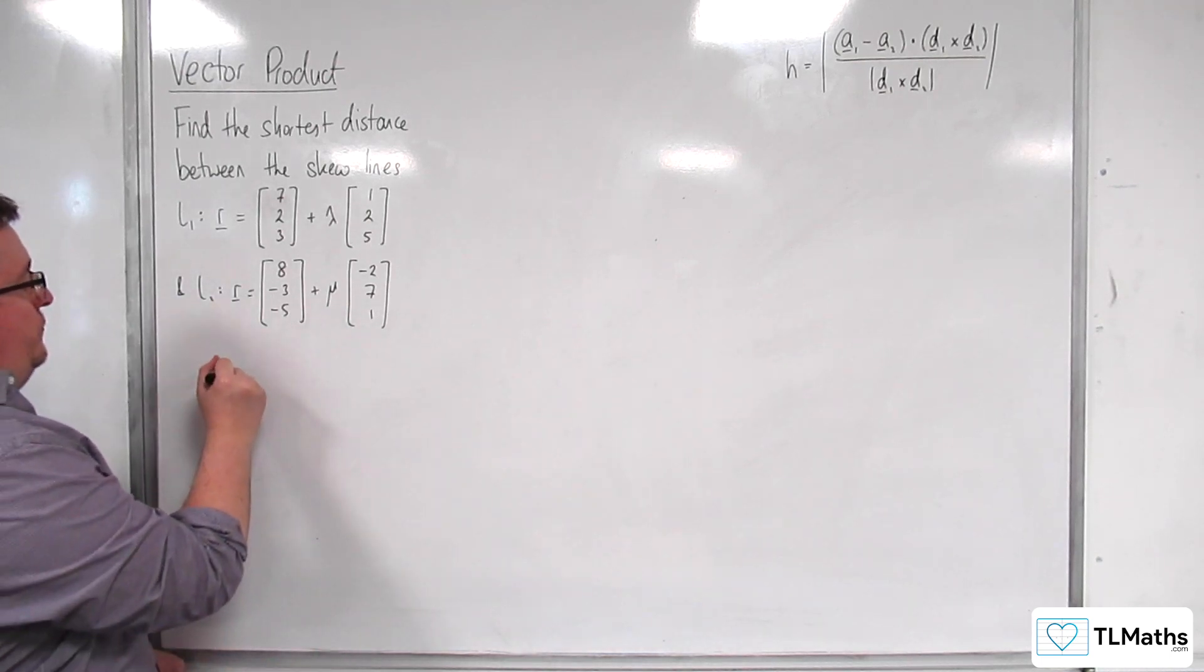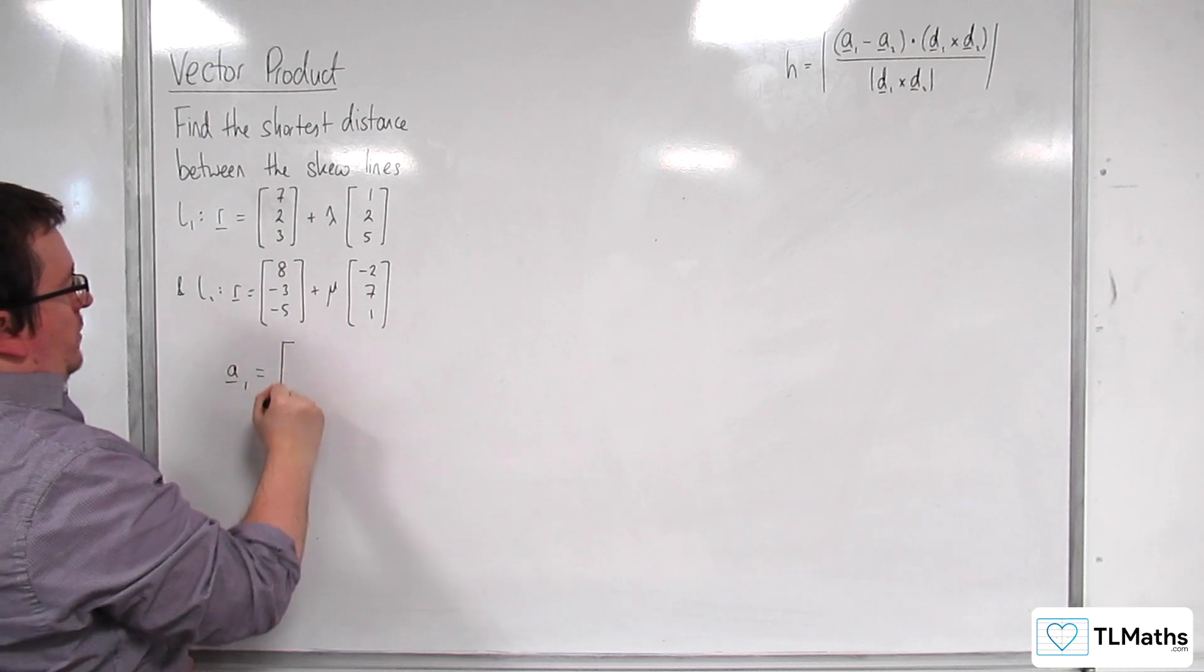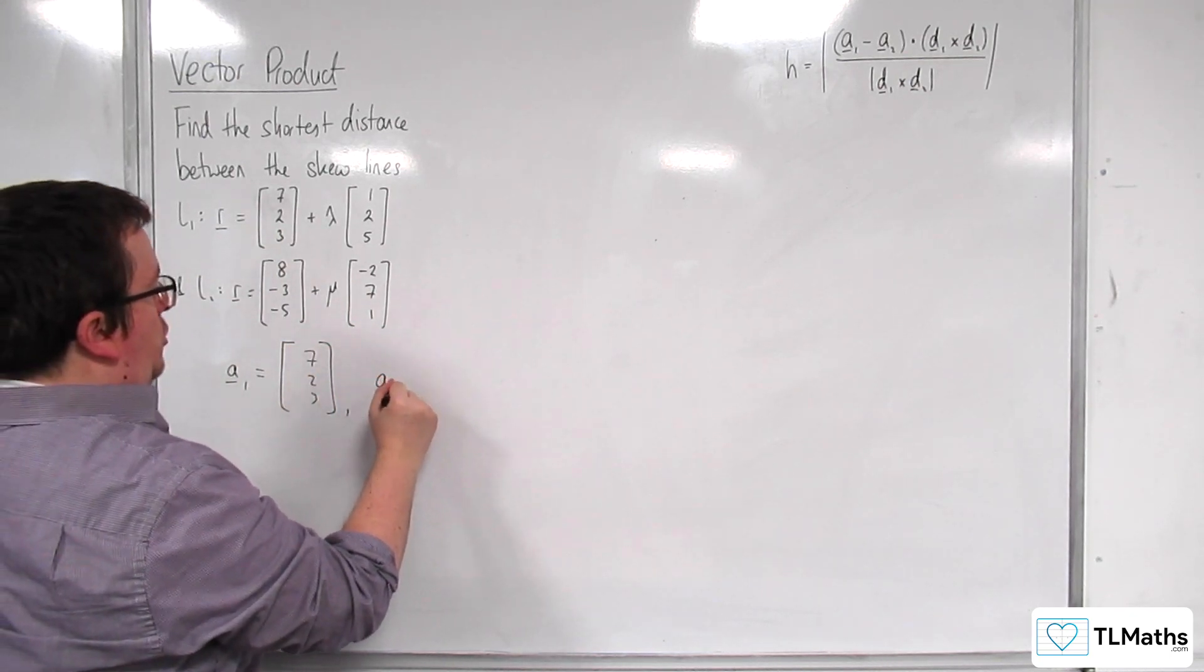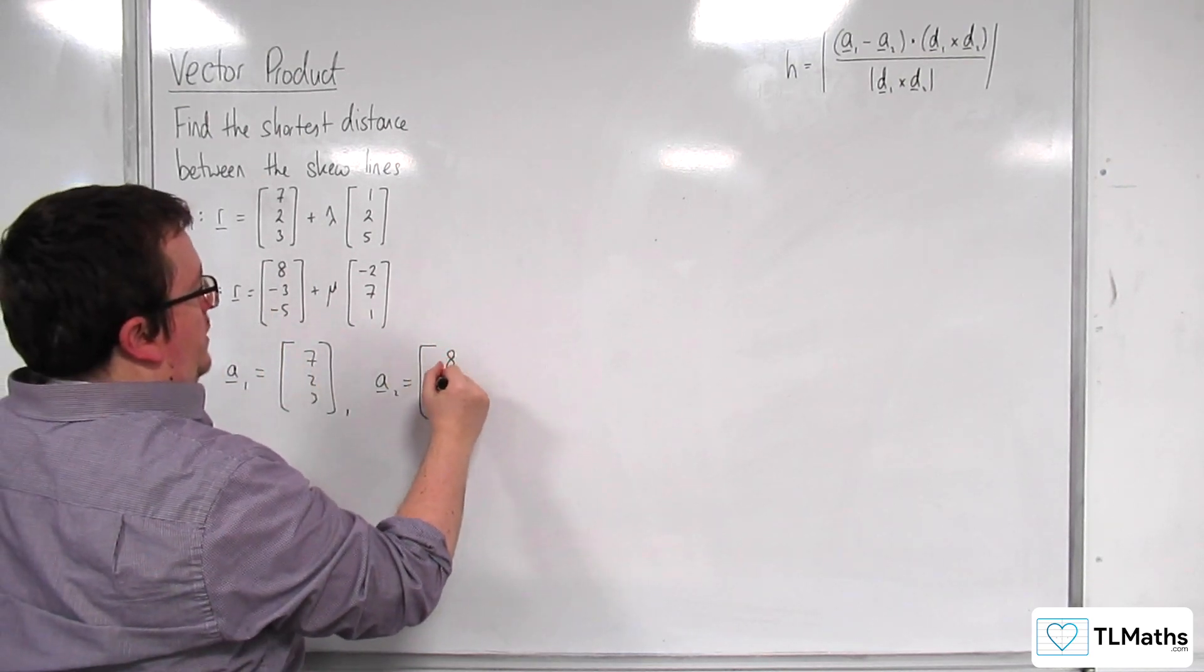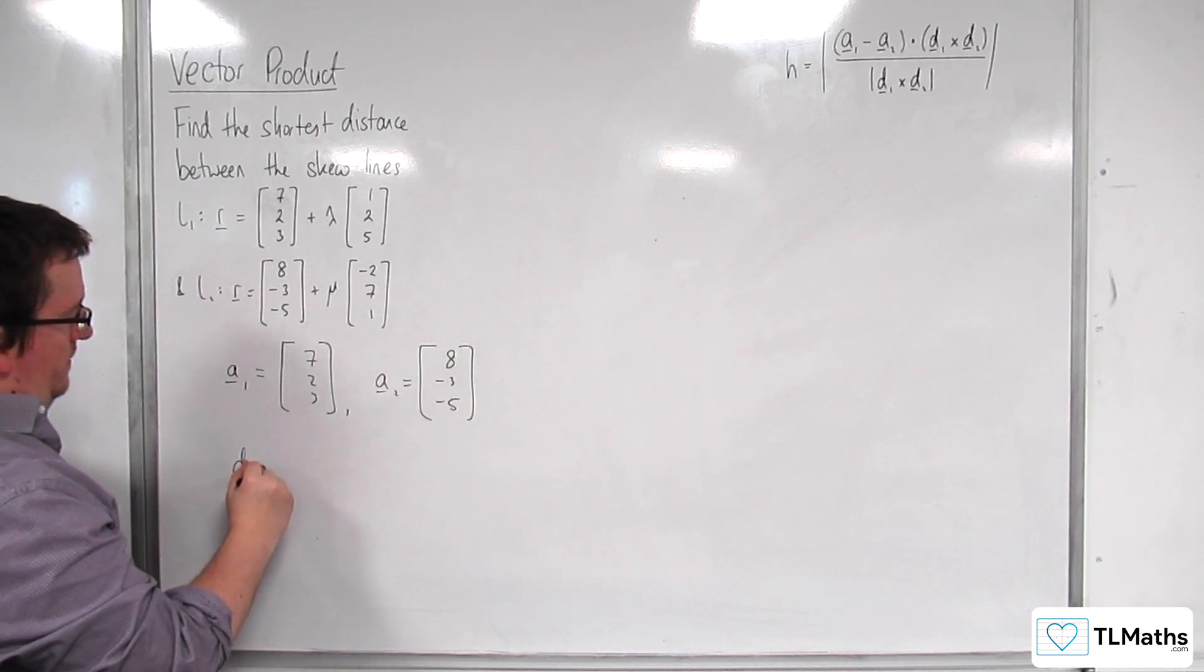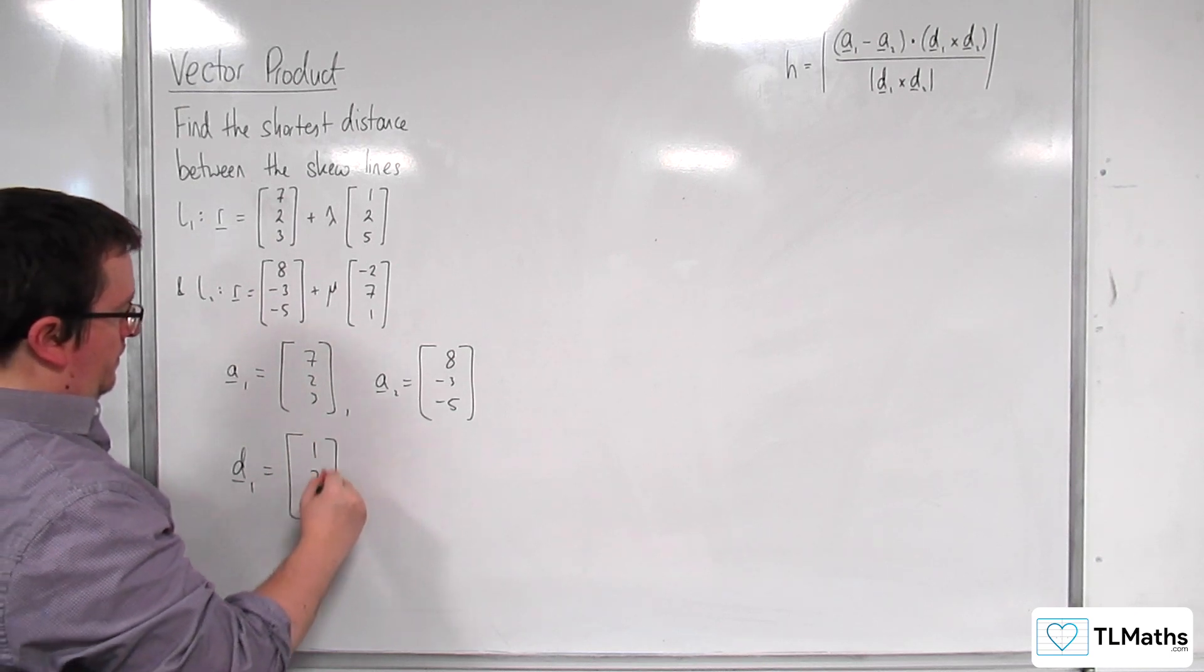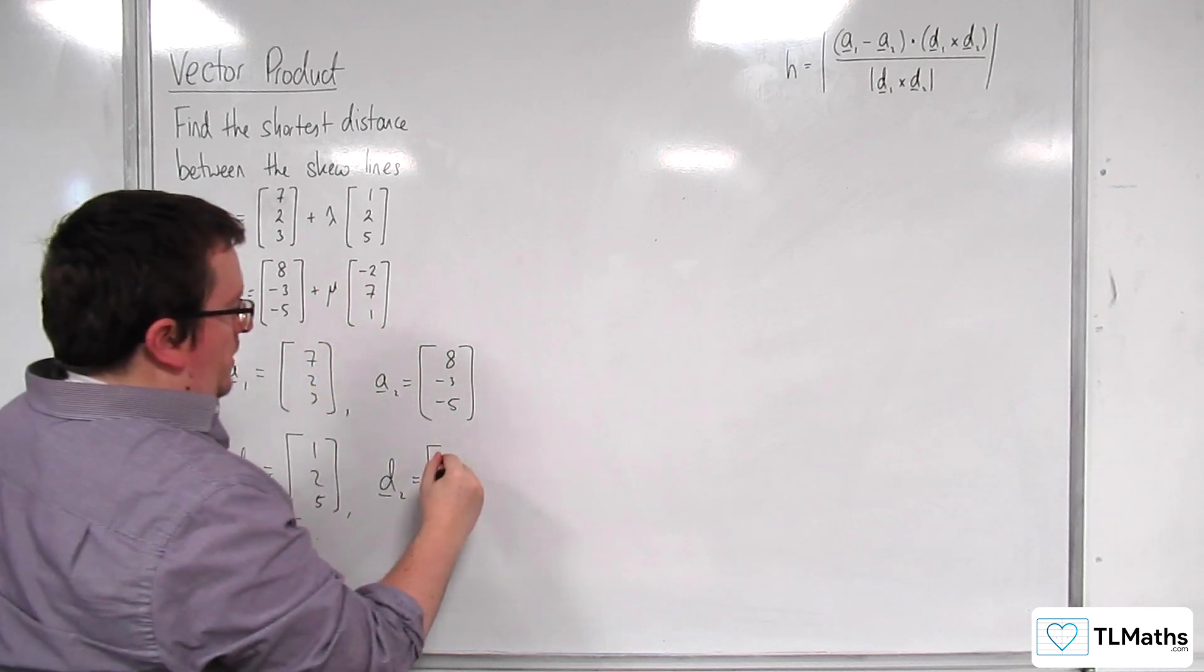So, let's let A1 be the position vector on line 1, so 7, 2, 3. And A2 is the position vector that we have here, 8, minus 3, minus 5. D1 is 1, 2, 5. And D2 is minus 2, 7, 1.